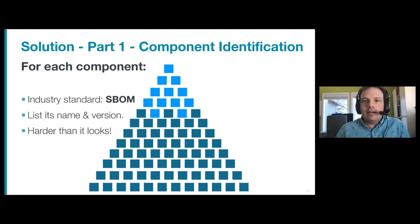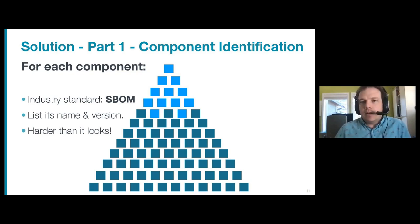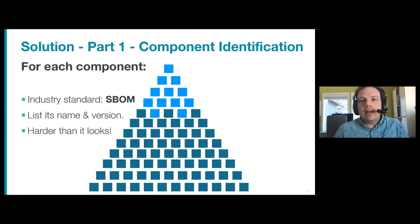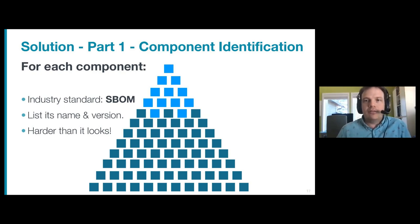Once you've identified for each component its name and its version, you can build reports. SBOM is a popular industry standard report — MergeBase supports that. SBOM stands for Software Bill of Materials — a report that accurately lists the complete inventory of components in a system. Once you have an SBOM report, you can ship it off to other tools that will tell you if there are vulnerabilities, licensing issues, or other problems.